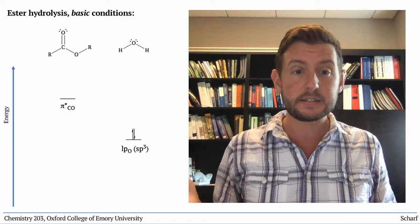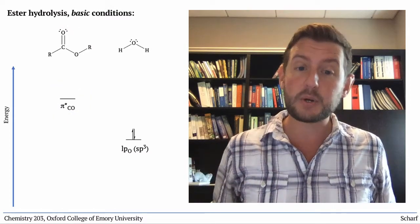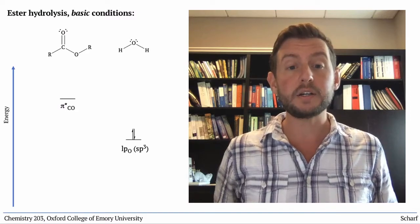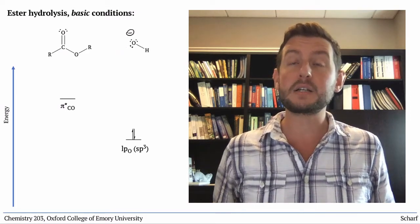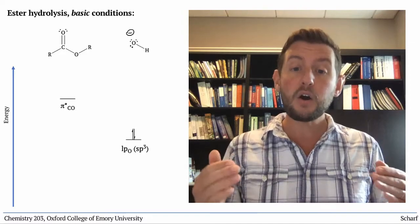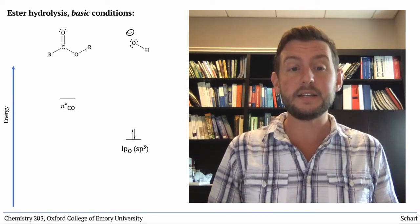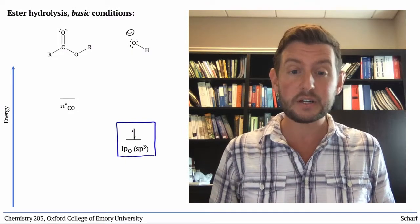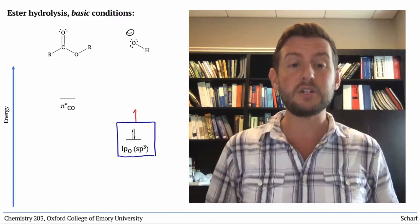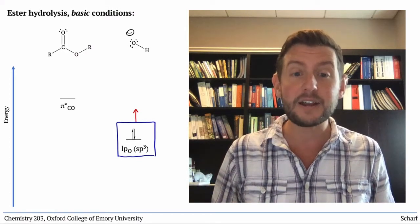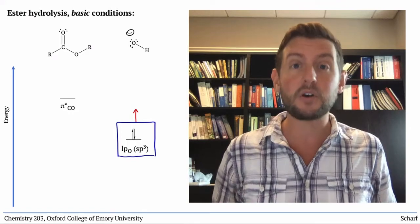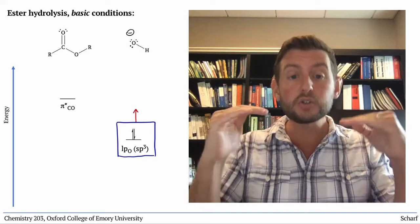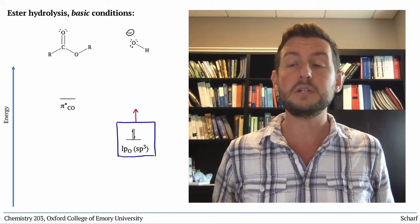So what about base catalysis? If base is present, its role is to deprotonate the nucleophile. Here, that means water is deprotonated to become hydroxide, OH-. The HOMO of OH- is still the sp3 lone pair, but now it has a negative charge. A negative charge raises the energy of orbitals, so now we've got an even higher energy HOMO and a stronger nucleophile. Again, because the frontier molecular orbitals are closer to each other in energy, the reaction proceeds more quickly.